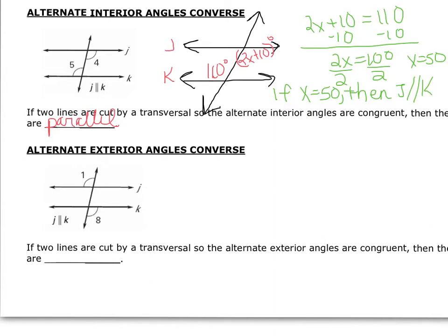The same applies with the alternate exterior angle theorem. If two lines are cut by a transversal so that the alternate exterior angles are congruent, then the lines are parallel. Let's do our own example.